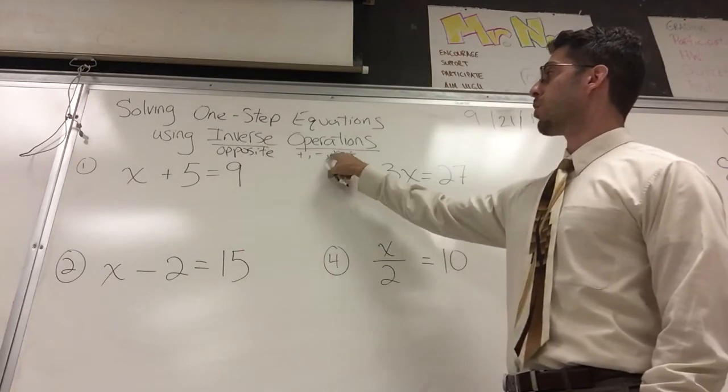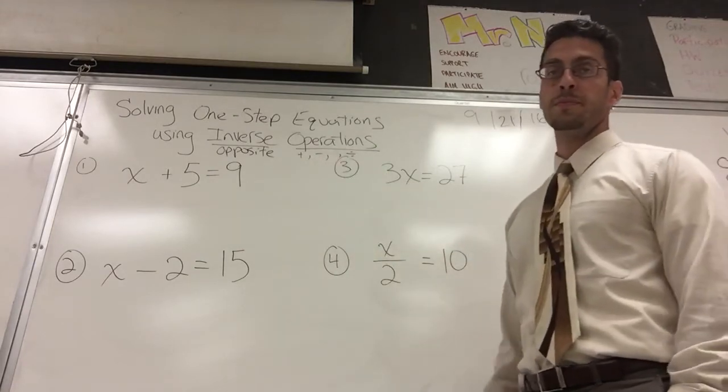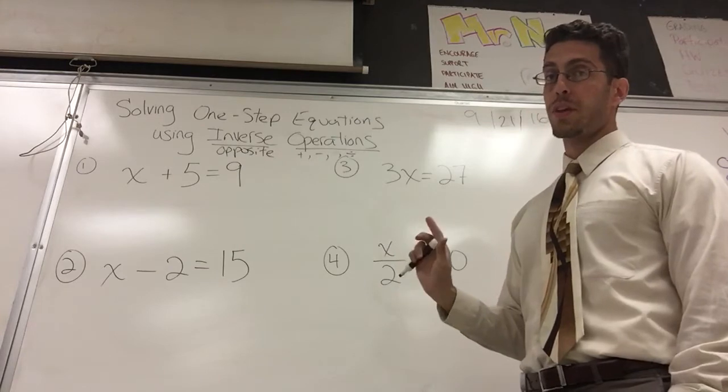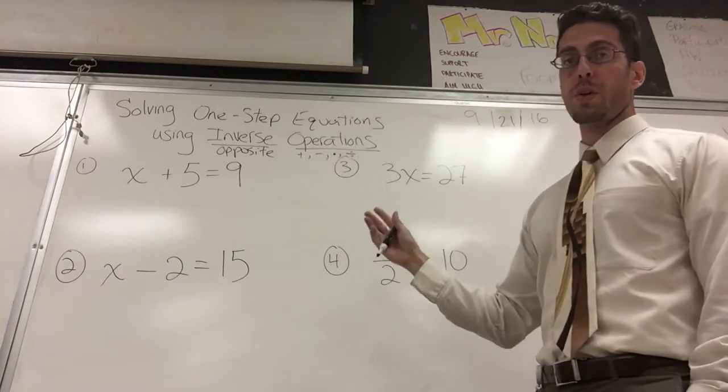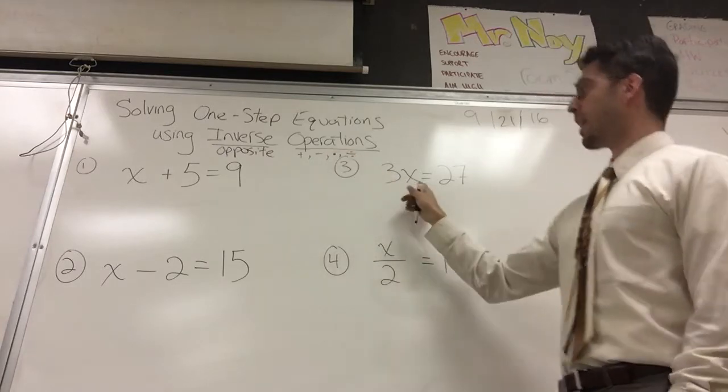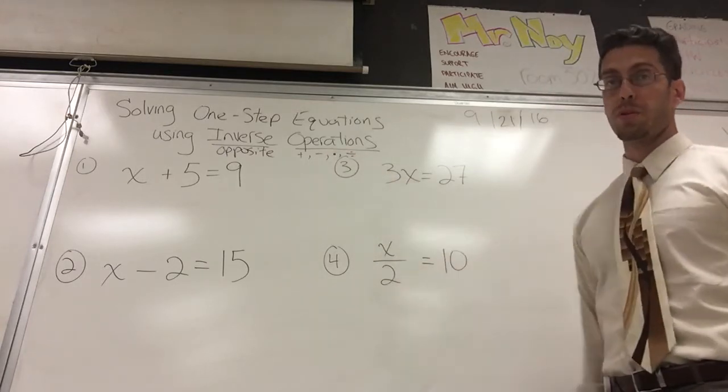And by the way, you don't really see x for multiplying anymore. What do you see? Dot, star, nothing at all. I'm going to go with dot. But you see a bunch of different ways. Dot and nothing at all is multiplying.